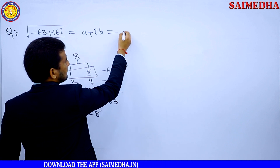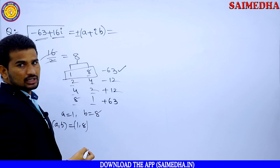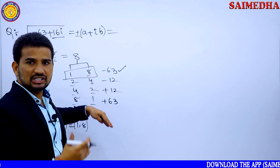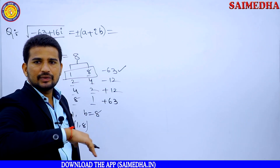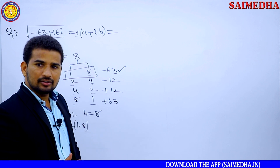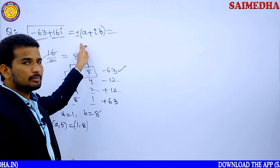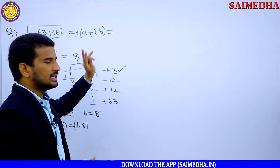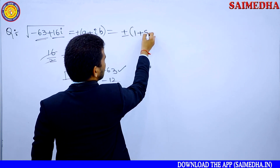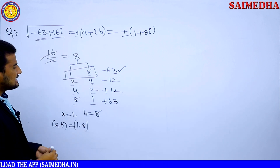Now we need to remember to place ± before the complex number representation, because the square root of any value gives ± (e.g., √4 = ±2, √9 = ±3). Similarly, the final answer here is ±(1 + 8i).